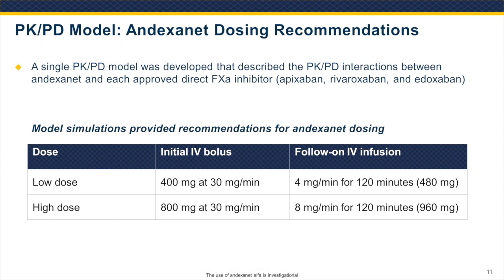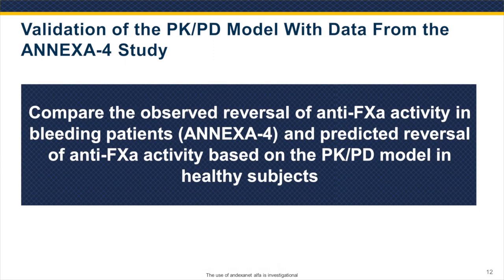In the end, using these simulations and the modeling, we found that two doses of andexanet were all that was required to reverse anticoagulation at all the different approved doses of the factor Xa inhibitors and at different times after dosing. These are a 400 mg bolus of andexanet administered at 30 mg per minute followed by a two-hour infusion at 4 mg per minute, or for higher doses, an 800 mg bolus at the same infusion rate followed by an 8 mg per minute infusion for two hours. This was all done in healthy volunteers, but the real test was whether these doses work in bleeding patients.